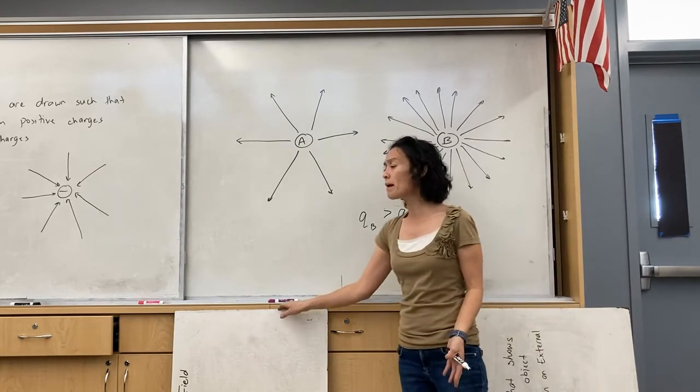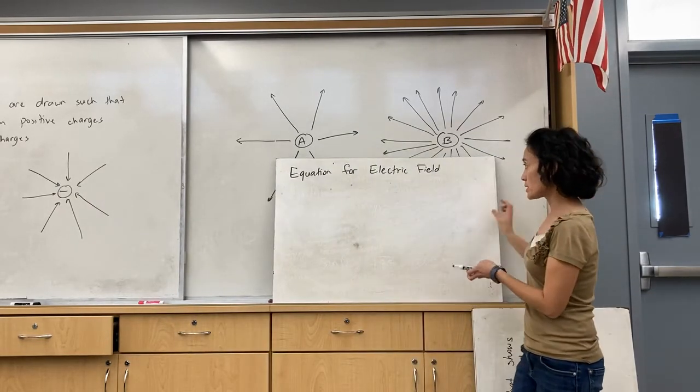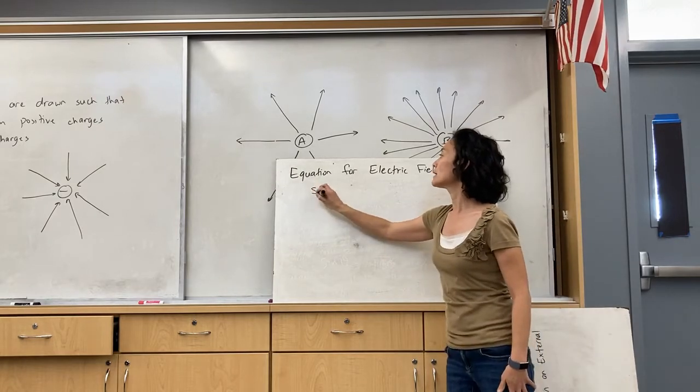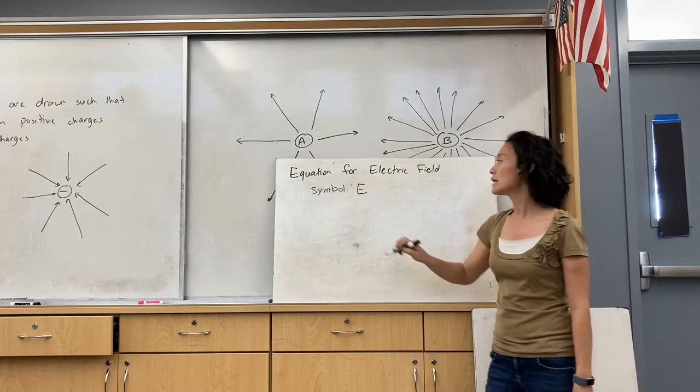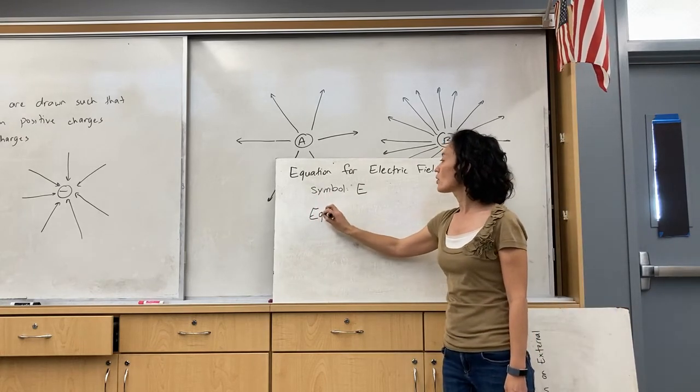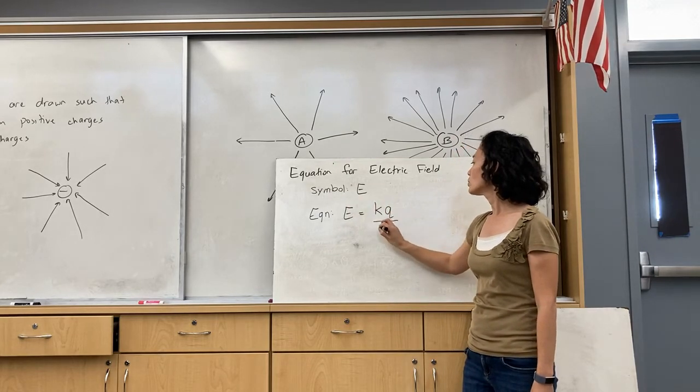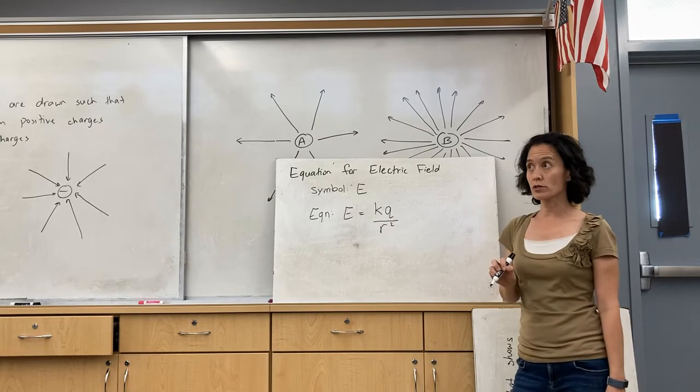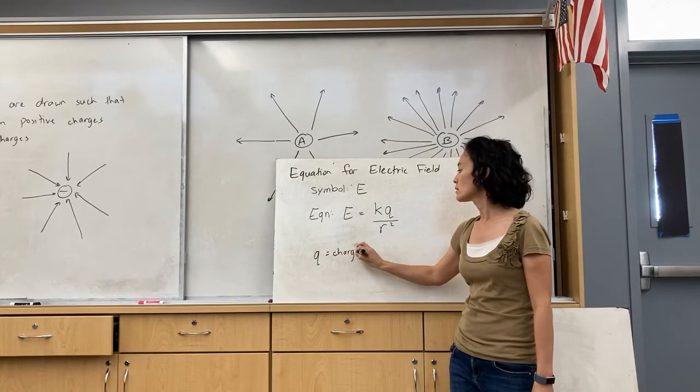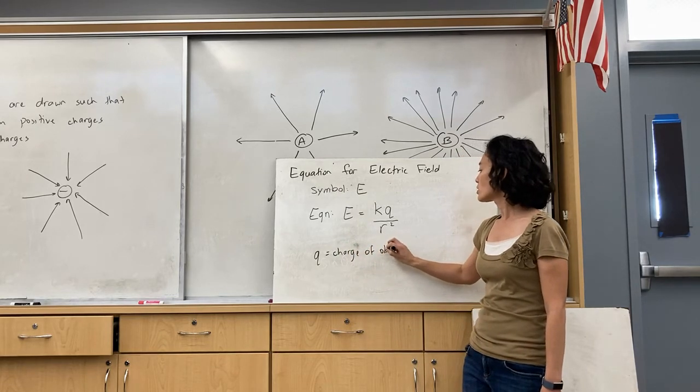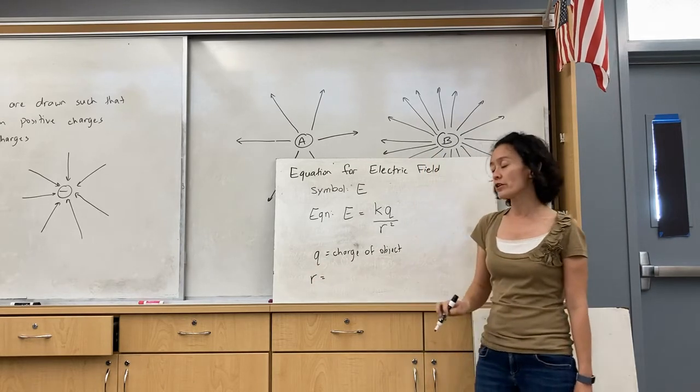But let's look at the mathematical model for electric fields. The equation for electric fields, it's symbolized with a capital E, makes it easy. So the symbol for an electric field is capital E. The equation for electric field is E is equal to KQ over R squared. So let's go over what these quantities are. Q is just the charge of the object. We know that from just our initial studies of electrostatics. R is the distance from the charged object.